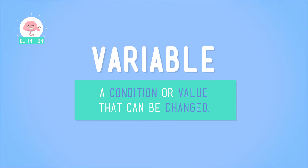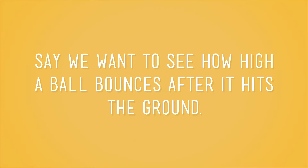A variable is just a condition or a value that can be changed. And sometimes a variable is something we can control, where we, as engineers, do the changing. But other times, variables are totally out of our control.